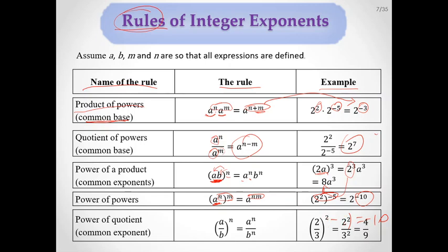The last rule is the power of a quotient or fraction: (A over B) to the N equals A to the N over B to the N. You distribute the power to both numerator and denominator. For example, (2 over 3) squared gives 4 over 9.